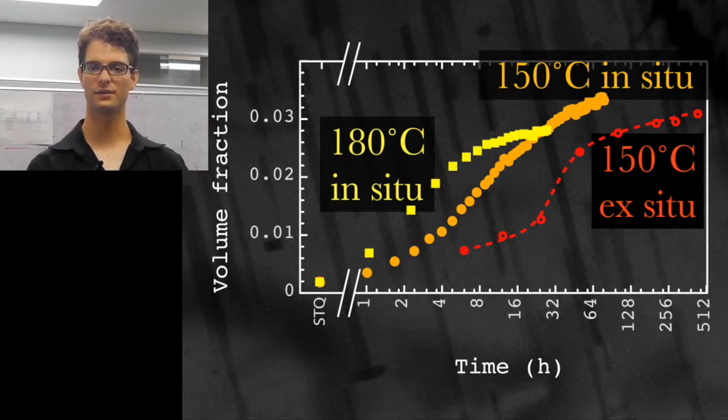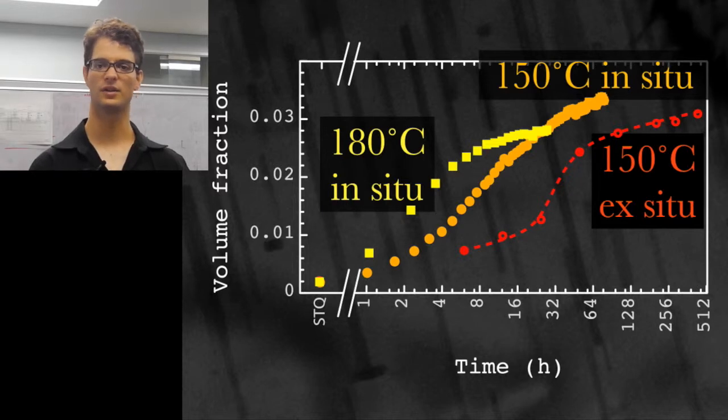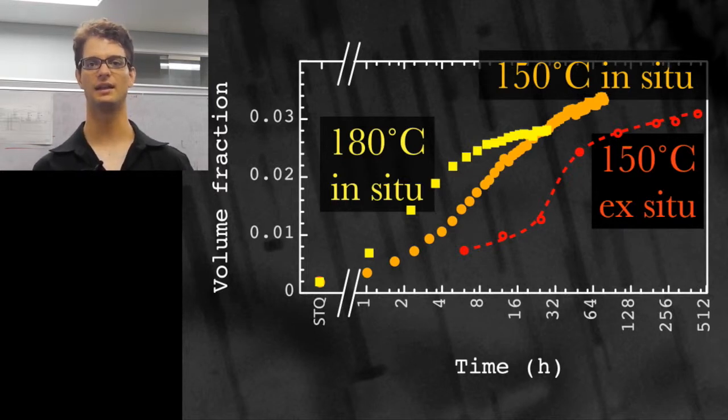You will note there is a difference between the in-situ experiment and the ex-situ experiment. That is because in the in-situ experiment the heating rate of the oven is different than in the ex-situ experiment, and this causes a difference in precipitation kinetics.